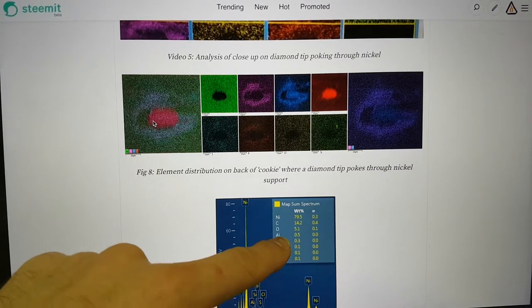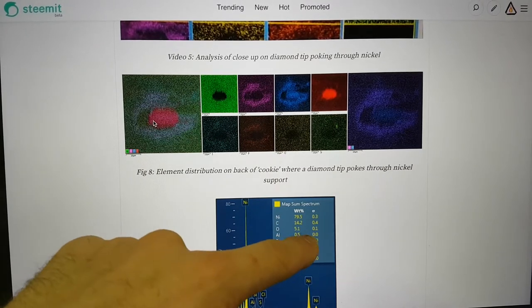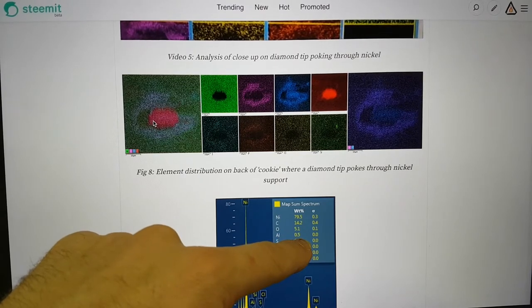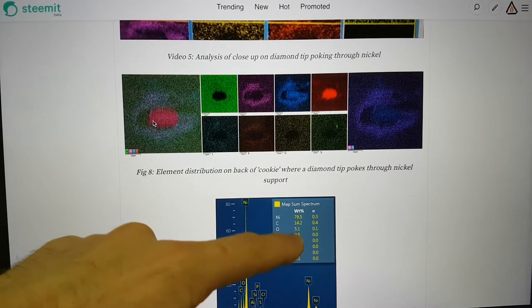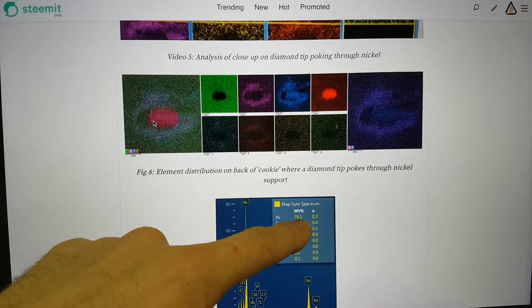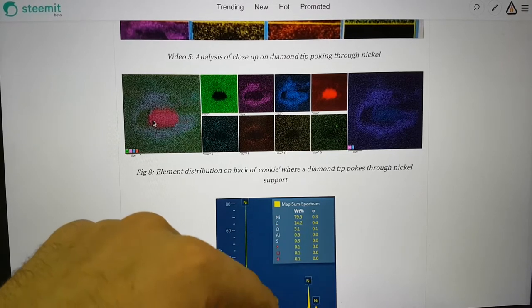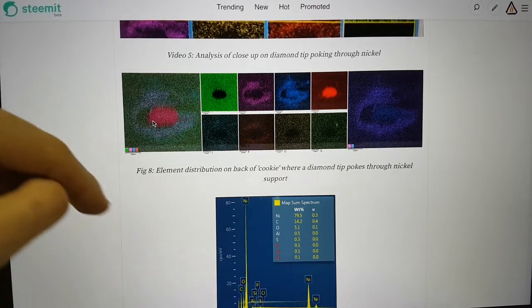It seems fairly confident that whatever this aluminum swirl is coming towards the diamond, it really does exist. Obviously most of what is in the field of view by weight is nickel and then carbon, oxygen and so forth.